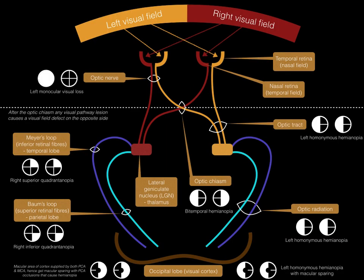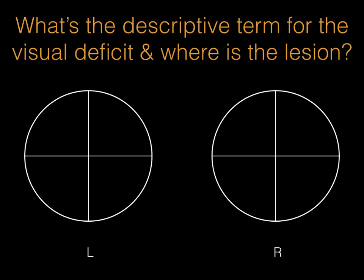Great, so we have covered the clinically relevant parts of the visual pathway and a multitude of visual field defects. To help consolidate this knowledge, this tutorial will finish by presenting six different visual field defects on screen. The aim is to first describe the visual field defect and then identify where in the pathway the lesion will be. You will have ten seconds for each. Thanks for watching. Bye.